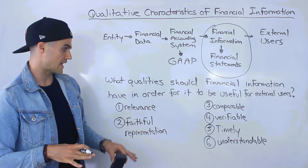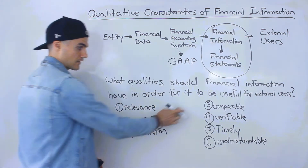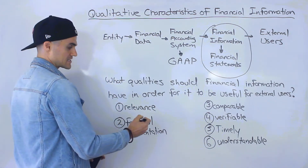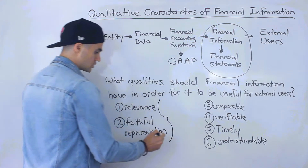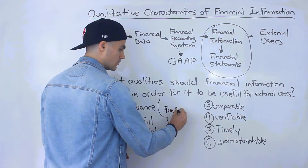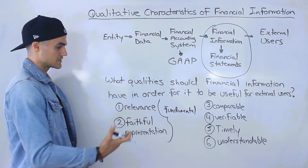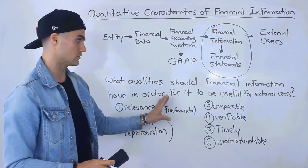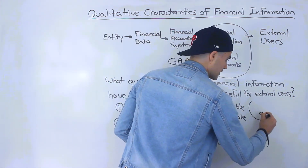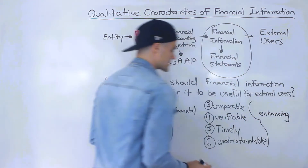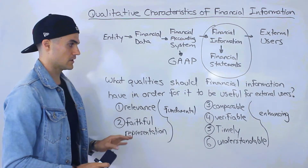A couple of things I want to mention before we get into detail on each of these. Notice that I group these in a certain way — one and two together, and then three, four, five, six. That wasn't by accident. A lot of textbooks group these qualities. The first two are usually called the fundamental qualities — pretty much the most important. And then these four are called the enhancing qualities. So the fundamental ones are the foundational qualities, and then these four enhance them. Not all textbooks or professors will group them — sometimes they just list all six — but many do.